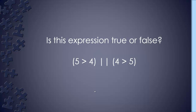Is this expression true or false? The expression is: 'five is greater than four OR four is greater than five.' Five is greater than four, so that part is true. It's an OR statement, so only one side has to be true. Therefore the expression is true. Next: change it to AND (double ampersand). Five is greater than four is true, but four is not greater than five — that's false. In an AND expression, both parts must be true, so the entire expression is false.